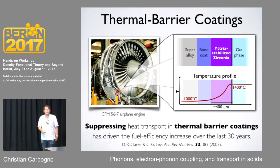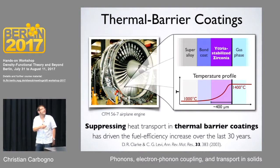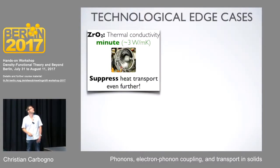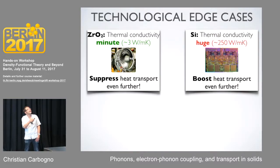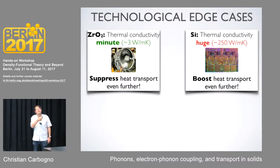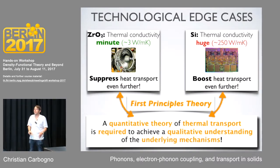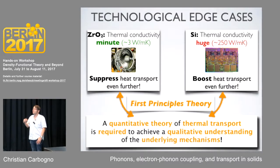The only thing that prevents melting of the turbine is this half a millimeter of ceramics. So obviously, understanding, optimizing, and improving these materials and lowering the thermal conductivity even further is an important job in the next couple of decades if you want to make air travel more fuel efficient. These are two edge cases that behave quite differently — one has a minute thermal conductivity and the other a huge one. One is a very harmonic material and the other is anharmonic, driven by different interactions.